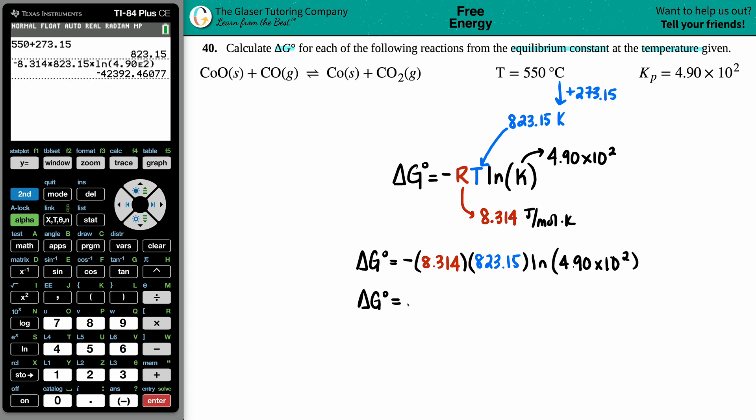You won't have any discrepancies in your answers. Press enter. I get a big number, well actually a really small number because it's negative: negative 42,392 joules per mole.